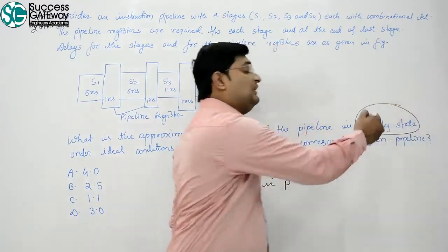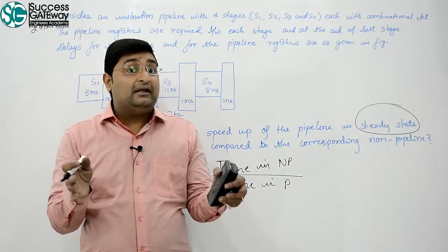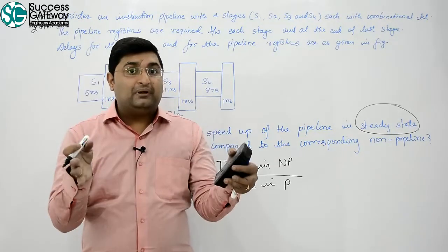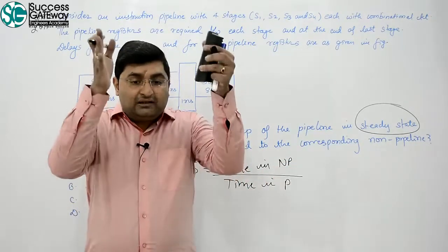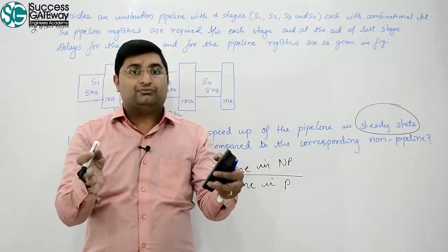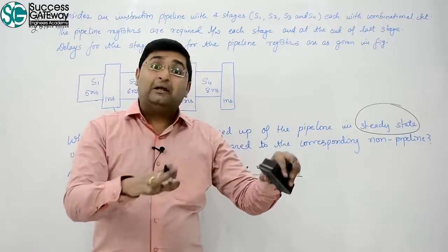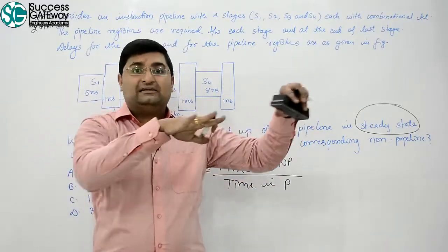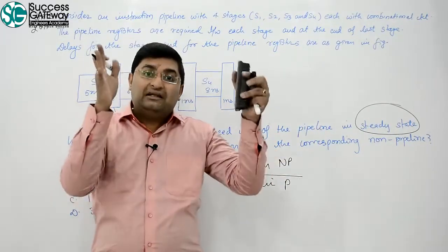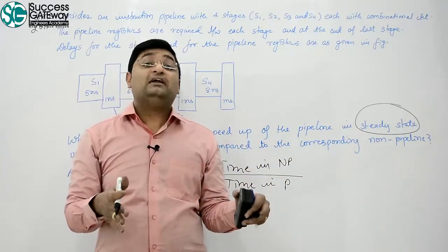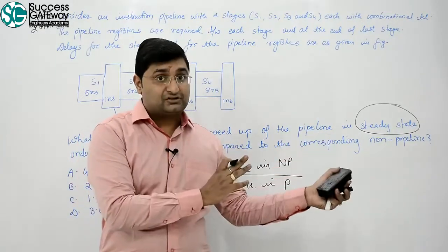What is the meaning of steady state? Steady state means if a pipeline has millions of instructions, we will consider the middle situation. Not the starting one, not the ending one. When pipeline is in its steady state, in its smooth stage, at that stage, what is average CPI? That is one. One clock per instruction.